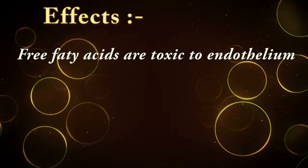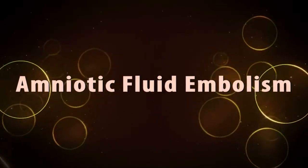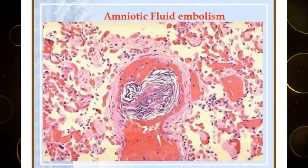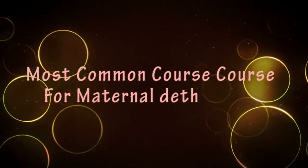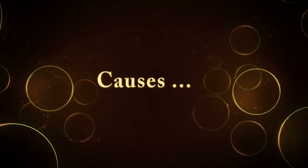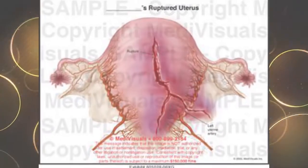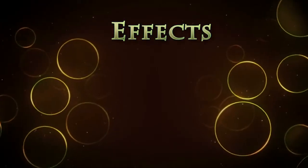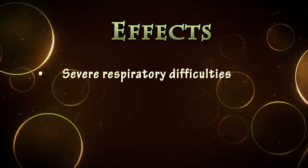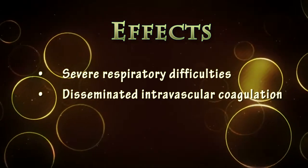The effects of fat embolism include free fatty acids that are toxic to the endothelium and stimulate platelet thrombi formation. Amniotic fluid embolism occurs when amniotic fluid, fetal cells, hair, mucin, and other material enter the maternal circulation. The mortality rate approaches 80%, making it the most common cause of maternal death in the developed world. It can be caused during labor or abortion, caesarean section, ruptured uterus, amniocentesis, or in multipara with large babies. Effects include severe respiratory difficulties leading to cardiorespiratory arrest and disseminated intravascular coagulation, because amniotic fluid is rich in thromboplastic substances.